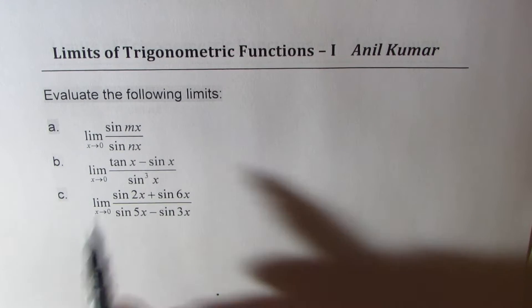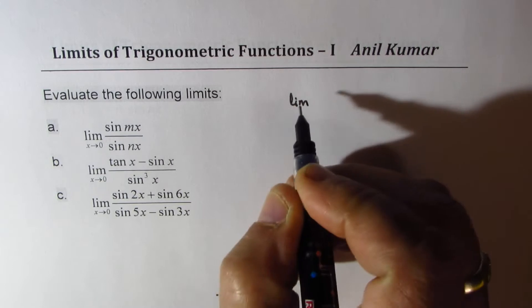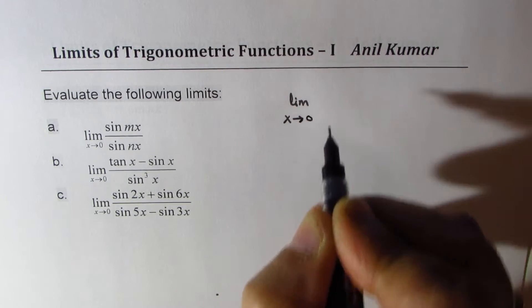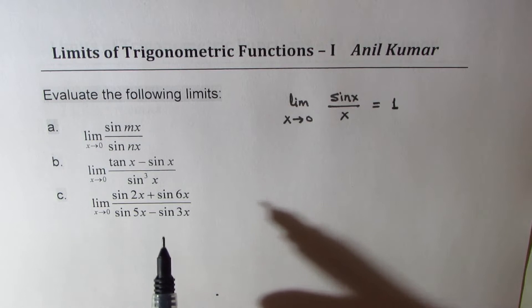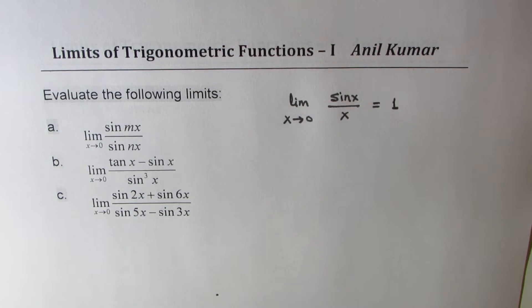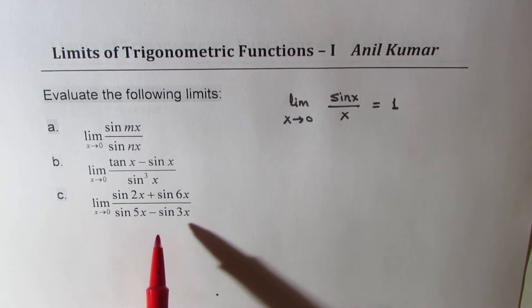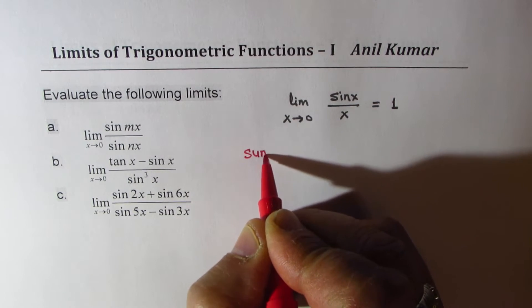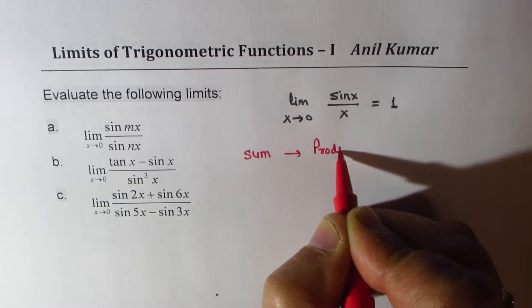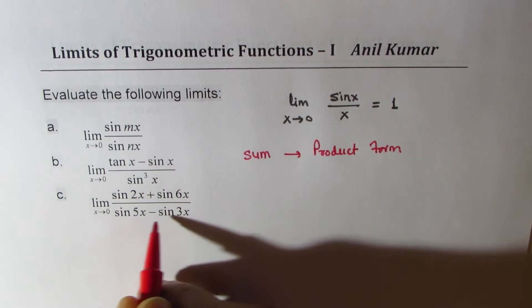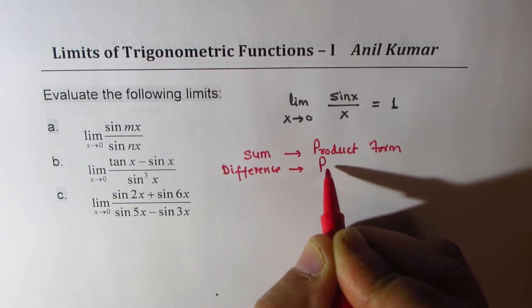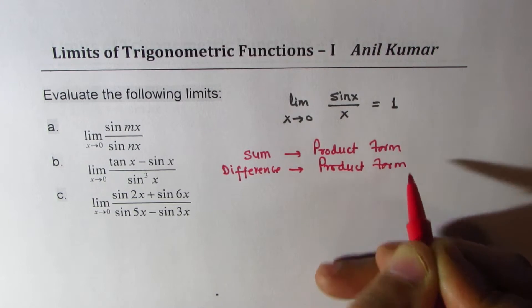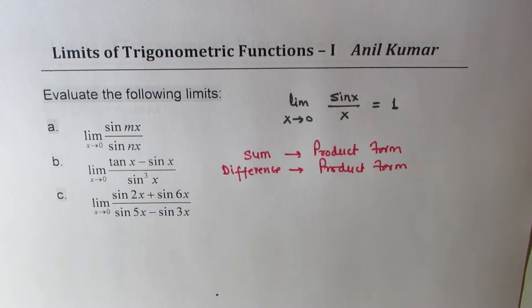What you need to remember is the basic limit: limit as x approaches 0 for sin(x) over x equals 1. For part (c), you may also need trigonometric identities. Since we are given sums or differences, it's a good idea to remember the sum-to-product formulas. For convenience, I'll provide those formulas here to help you solve these questions.